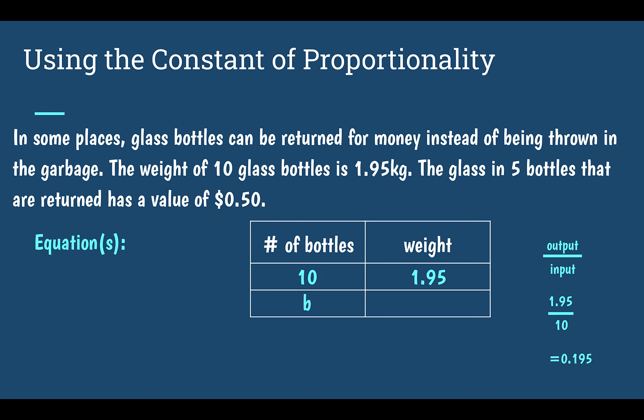To create my equation with B, I would take the number of bottles and multiply that by 0.195. My equation would be: the weight is equal to 0.195 times B.